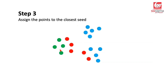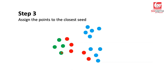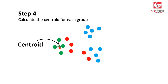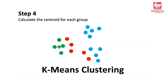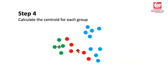At this stage, we need to calculate the centroid of each of the groups — that's step four. So we will calculate the centroid of the green ones. Let's say this is the center. The centroid is nothing but an average or mean, and that's why this is called k-means clustering. We can also calculate the centroid for the red group and for the blue group.